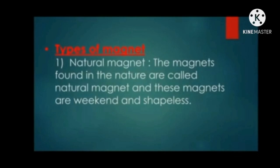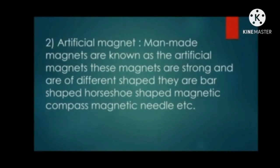Types of magnet: Natural magnets are found in nature and are weak and shapeless. Artificial magnets are man-made, strong, and come in different shapes such as bar shape, horseshoe shape, magnetic compass, and magnetic needle.